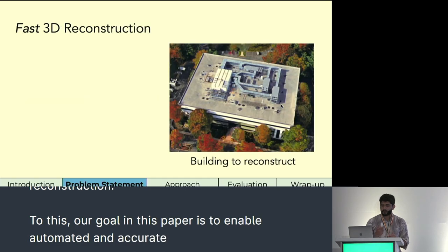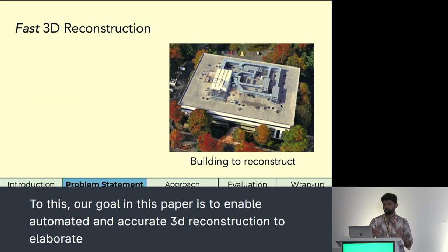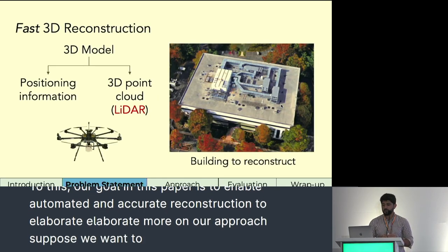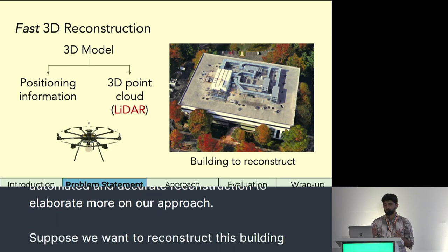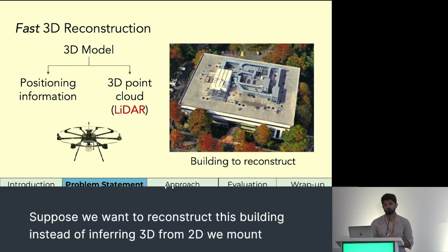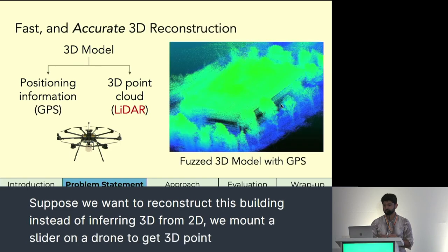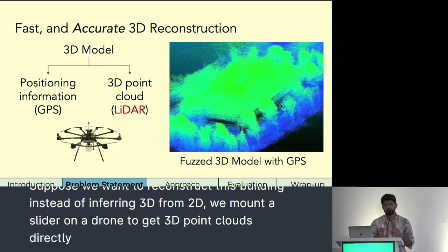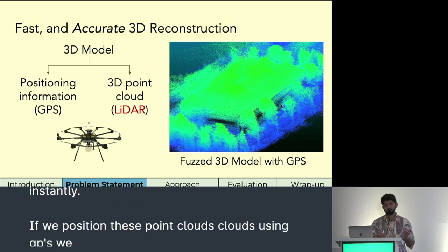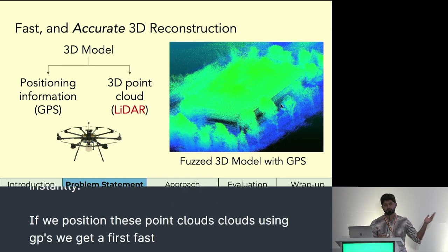To elaborate more on our approach, suppose we want to reconstruct a building. Instead of inferring 3D from 2D, we mount a LiDAR on a drone to get 3D point clouds directly and instantly. If we position these point clouds using GPS, we get a fuzzed and blurred 3D model, such as the one you see here.